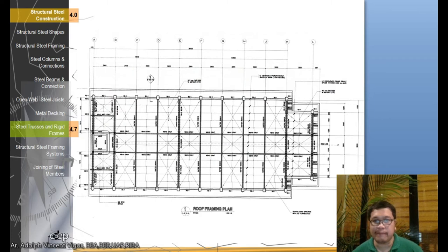This is an example of a roof framing plan. If you're under me in Building Tech 2, I think you have already seen it, but this is more detail. You have here, I can't see clearly, but this looks like the trusses here. As you can see, this is the column.